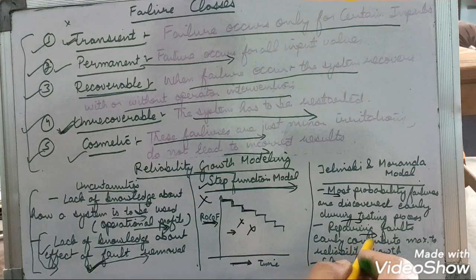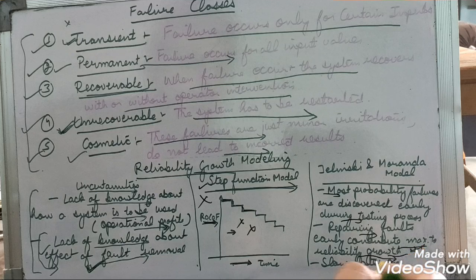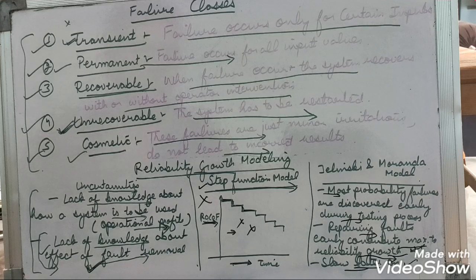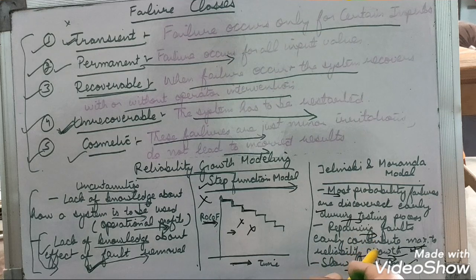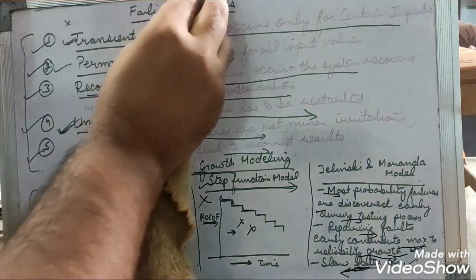The next model is the Jelinski and Miranda model. In this model, most of the probable failures are discovered early during the testing phase. Repairing faults early contributes maximum to reliability growth. So the reliability grows most in the beginning phase of testing, but later on it slows down. This differentiates it from the step function model.